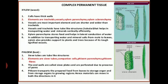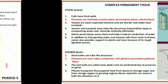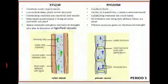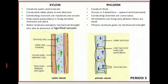Phloem transports the prepared food from the leaves to the storage organs, and from the storage organs to the growing regions. Hence, materials can move in both directions. Now here are some differences between xylem and phloem. First, xylem conducts water and minerals, while phloem conducts food.